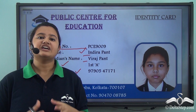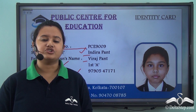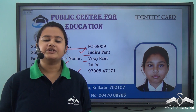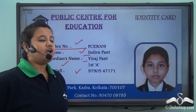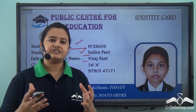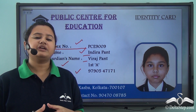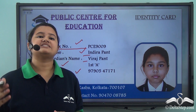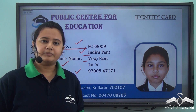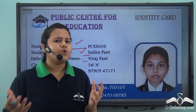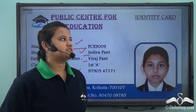The index number is unique to every student and it helps the teacher to identify a particular student. Now just as the index number or roll number helps the teacher to identify a student, similarly every place has a specific number that helps us to locate a particular place on a globe or a map. What is this number and how do we get it? Let's find out.